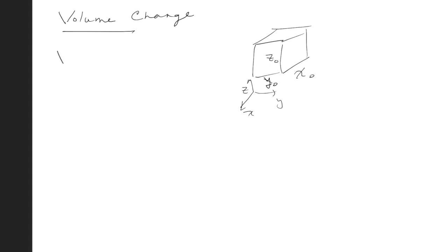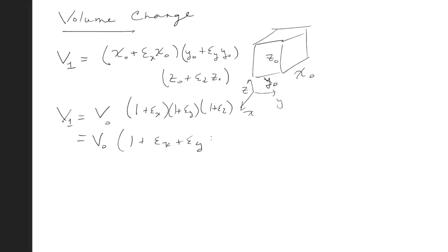After the deformations, let's say we strain that, then the resulting volume will be equal to x naught plus epsilon x times the initial length. We do the same for y and for z naught. We can multiply this all out, and it's going to leave us with v1 equal to v naught times 1 plus epsilon x, 1 plus epsilon y, 1 plus epsilon z, which is equal to v naught times 1 plus epsilon x plus epsilon y plus epsilon z plus epsilon x times epsilon y and so on.